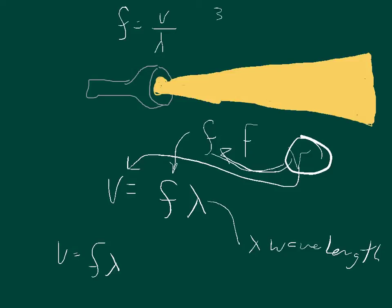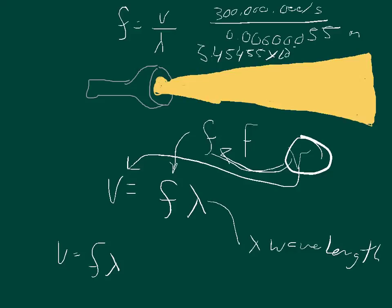The velocity is 300,000 kilometers, so we add another thousand—300 million meters per second. The wavelength is 0.00000055, which I got from 5.5 times 10 to the negative 7th meters. So the frequency we get from that is 5.45455 times 10 to the negative 14th—I'm sorry, not negative, times 10 to the 14th.